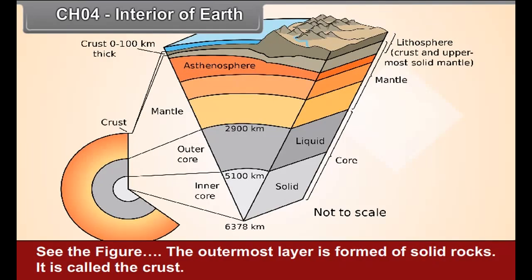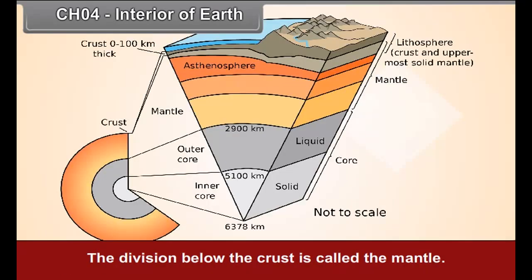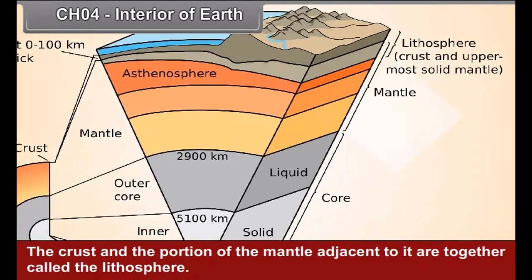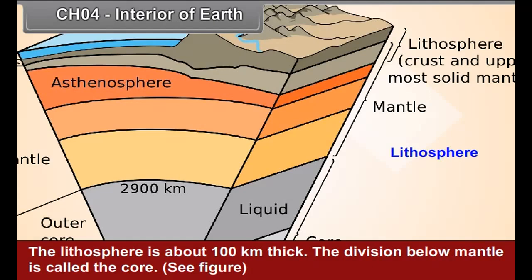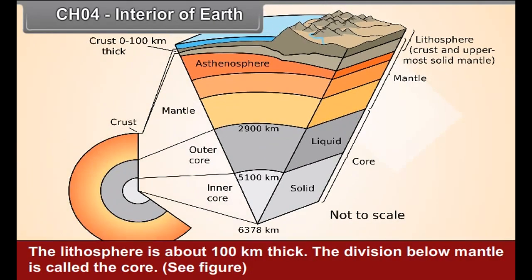See figure 4.1. The outermost layer is formed of solid rocks and is called the crust. The division below the crust is called the mantle. The crust and a portion of the mantle adjacent to it are together called the lithosphere. The lithosphere is about 100 kilometers thick. The division below the mantle is called the core.